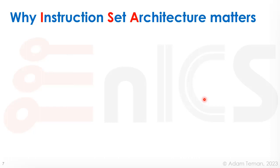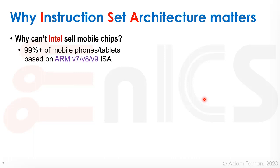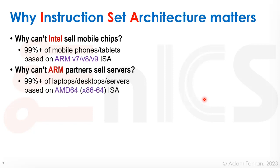Why does the instruction set architecture matter? I want to give a few different questions. One is: why can't Intel sell mobile chips? A vast majority — maybe 99% or more — of mobile phones, tablets, and so forth are based on the ARM instruction set architecture. And on the flip side, why can't ARM sell servers? A vast majority of laptops, desktops, and servers are based on AMD64, also known as the x86-64 ISA.